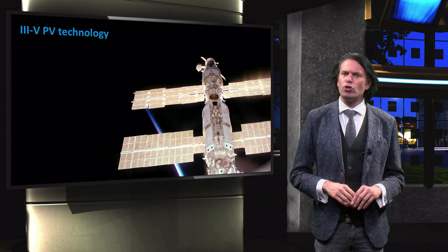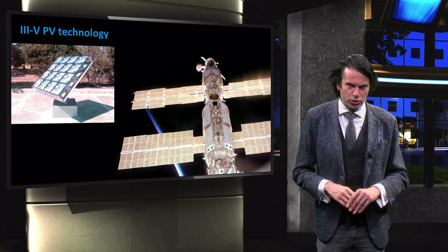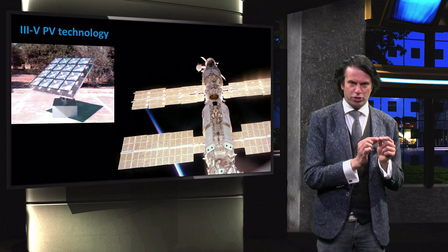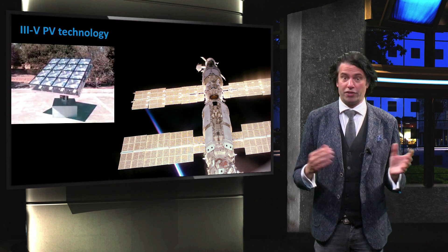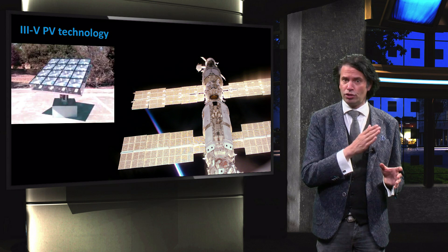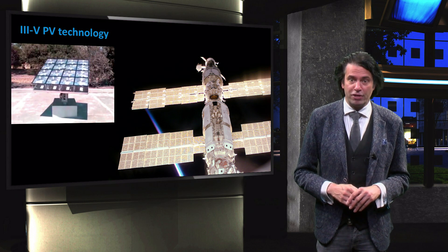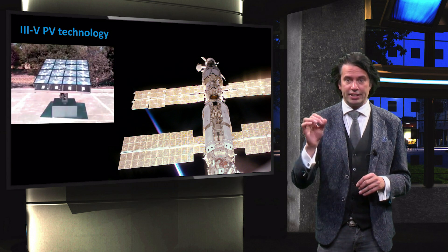The inset shows a concentrator PV device, where lenses are used to focus the sunlight on a very small solar cell. A tracking system is used to follow the sun through the day. We will discuss concentrator PV and PV use for space exploration later this section.